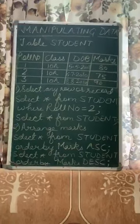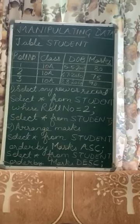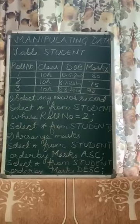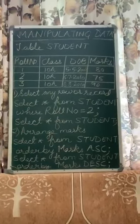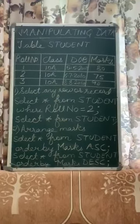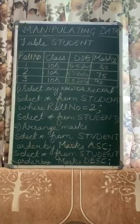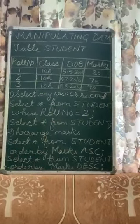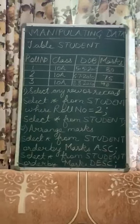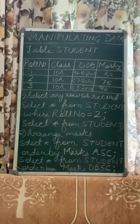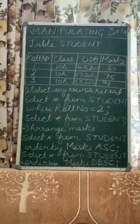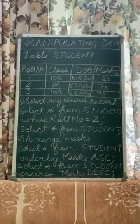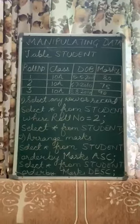Now let's look at ordering or arranging data in the database. Suppose we want to arrange the marks column in a particular order. There are two orders: ascending — from lowest to highest marks — and descending — from highest to lowest marks. To execute this, write SELECT * FROM student ORDER BY marks ASC followed by a semicolon. Here, ORDER BY refers to ordering the marks in a particular way, and ASC stands for ascending.